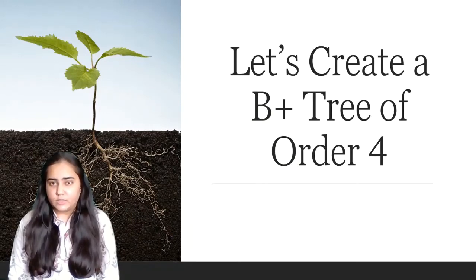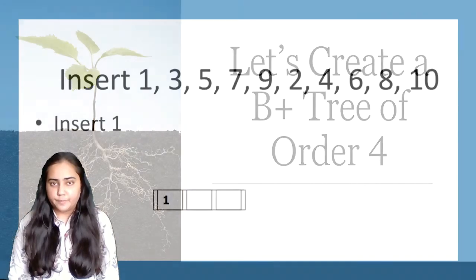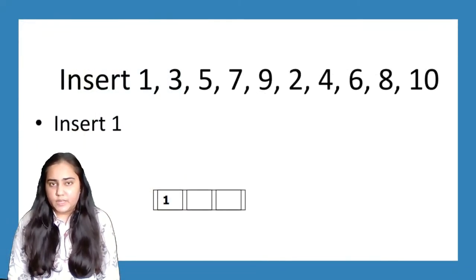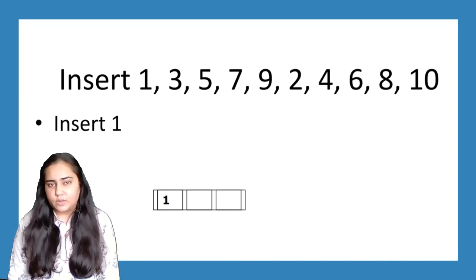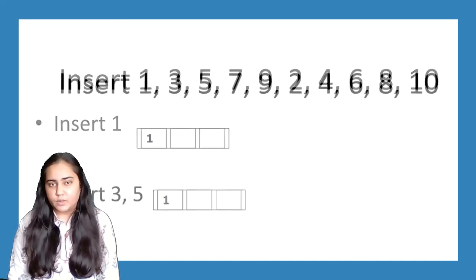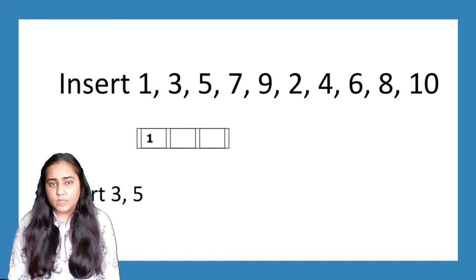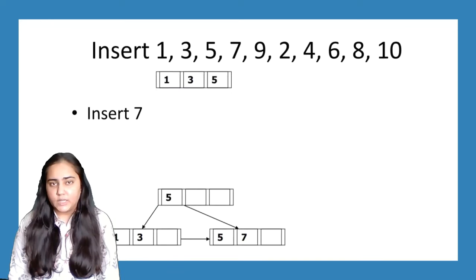These are the values I'm going to insert. First I insert 1. Because it's an order 4 tree, I can store a maximum of three keys in one node, and that node can have a maximum of four children. Then I insert 3 and 5 directly in ascending order.